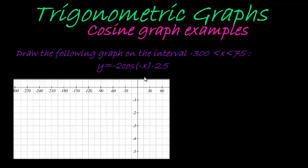In our final cosine example, we can see there are quite a few parameters in this one. We're going to take our systematic approach and you'll see it's very simple.